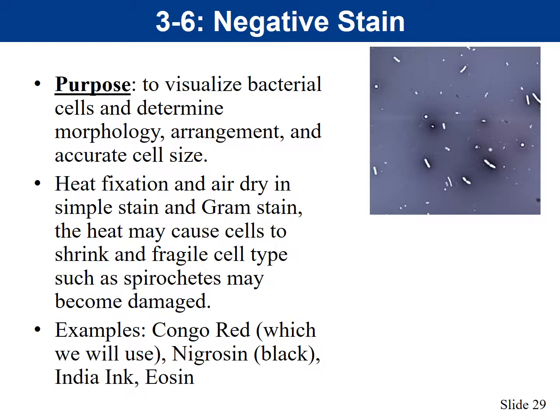The next activity we're going to cover is the negative stain. The purpose of a negative stain is to visualize bacterial cells and determine morphology, arrangement, and accurate cell size. Morphology refers to shape — what is the shape of the bacteria itself. Arrangement refers to how the colonies are arranged when the bacteria grow — isolated cells, pairs, chains, or clusters.